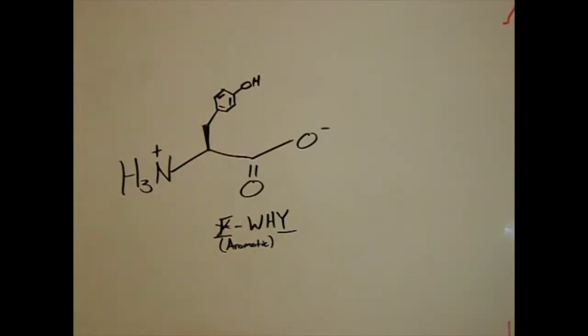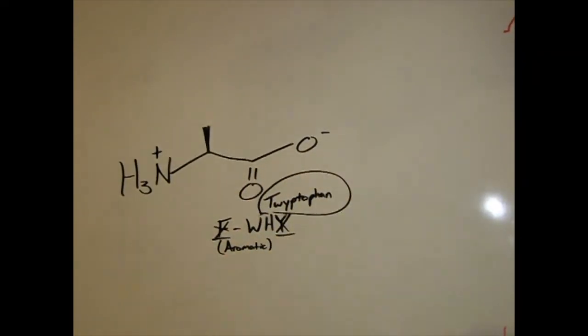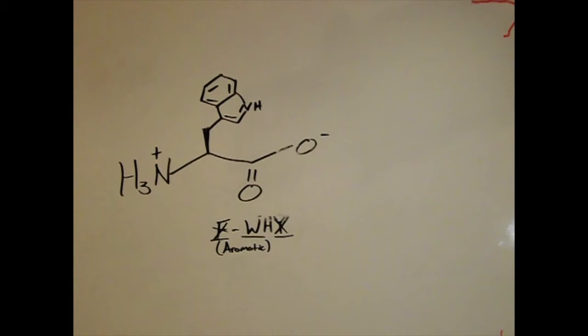Second is tyrosine. In tyrosine, we add a hydroxy group to the phenyl. Next is tryptophan. We say tryptophan like Elmer Fudd because it has a W for its initial. Tryptophan has a W located in its structure as we can see right here.